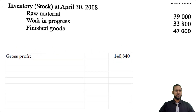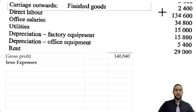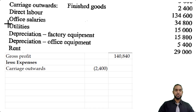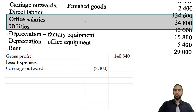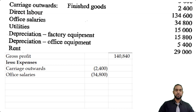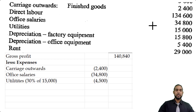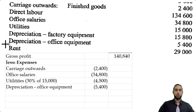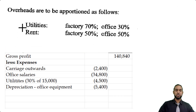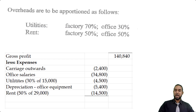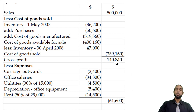There are no additional revenues, so we go straight to expenses. Carriage outwards on finished goods is a selling expense and goes here. Office salaries of $34,800 are included. Utilities — remember, 30% of $15,000 goes to the office, so that's $4,500. Depreciation on office equipment is $5,400. Rent is $29,000 split 50/50, so $14,500 goes to the office. Total expenses are $61,600, which when subtracted from gross profit gives a net profit of $79,240.